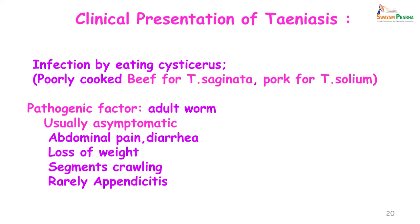Let us look at the clinical presentation of taeniasis. Infection is by eating cysticerci present in poorly cooked beef or pork, and this cysticercus develops into an adult in the small intestine of man. Usually patients do not have any symptoms. The few who do will present with abdominal pain, diarrhea, maybe loss of weight, and quite often they give a history of either segments being passed in the feces or segments crawling out of the anus — they may find a segment crawling in the perineal region or on the buttocks. Rarely these worms can give rise to appendicitis.